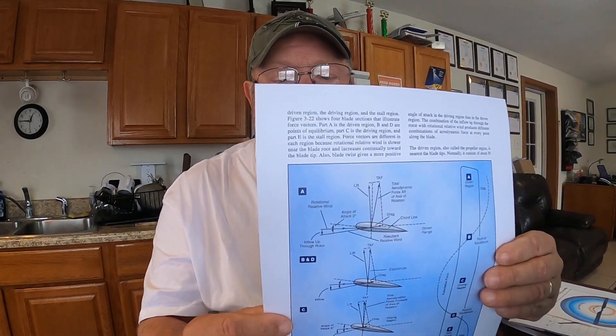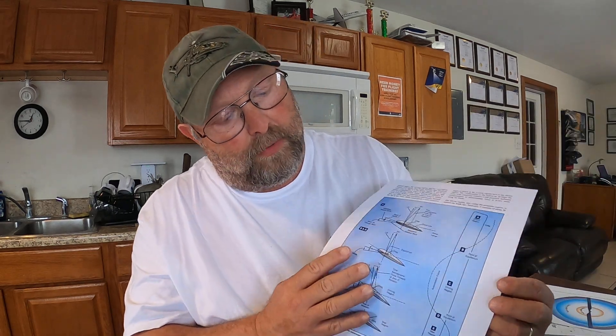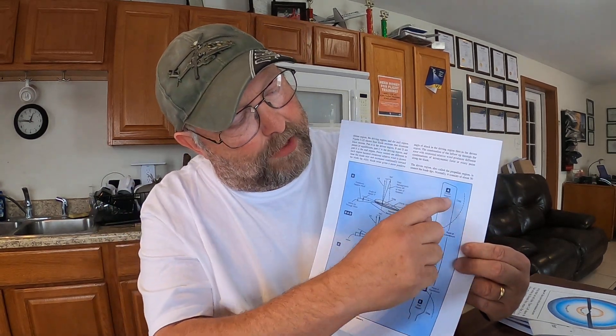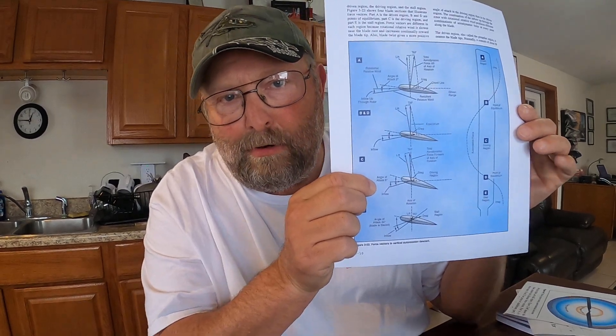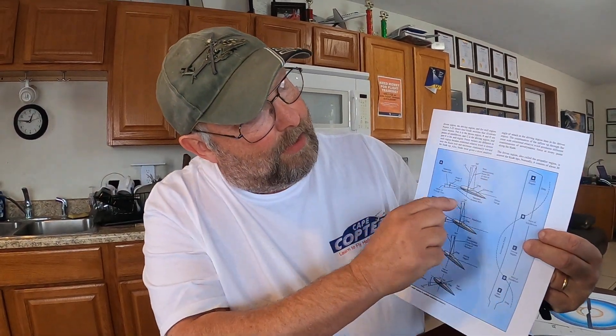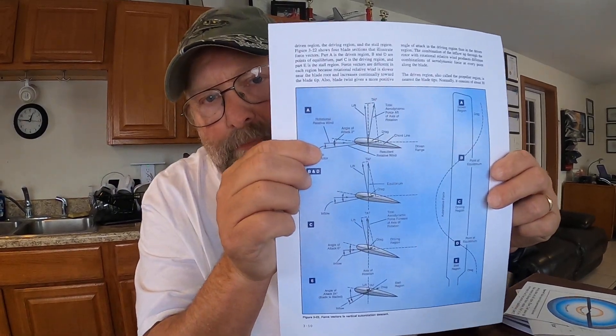If you look in the older version of the Rotorcraft Flying Handbook, it actually gives numeric values for the angles of attack. Here's the root of the blade — this is the stalled region — then we have the driving region that produces the rotational force, and then the driven region that actually slows the blade down. Section C shows an angle of attack of about 6 degrees, which is right dead in the middle of that most efficient area giving the best lift-to-drag ratio. Out here in the driven region at section A, the angle of attack is only about two degrees.